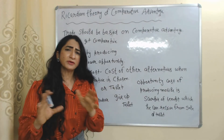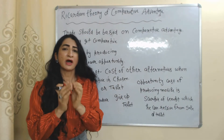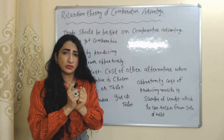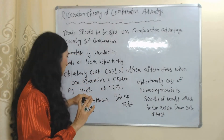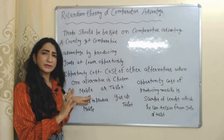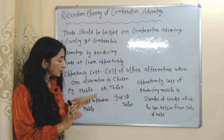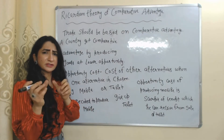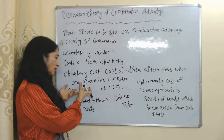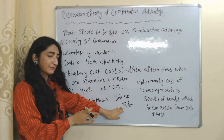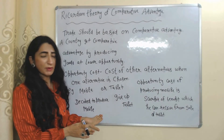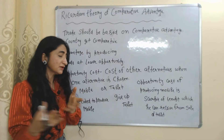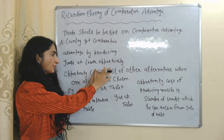What do you mean by opportunity cost? Opportunity cost means the cost of other alternatives when one alternative is chosen. For example, you have only two options: either you can produce mobile or you can produce tablet. In order to produce mobile, you give up tablet because you have limited resources. With these limited resources, either you can produce mobile or tablet, but you give up tablets so that you can produce mobile. The opportunity cost of producing mobile is the sacrifice of benefit which you can receive from the sale of tablets.